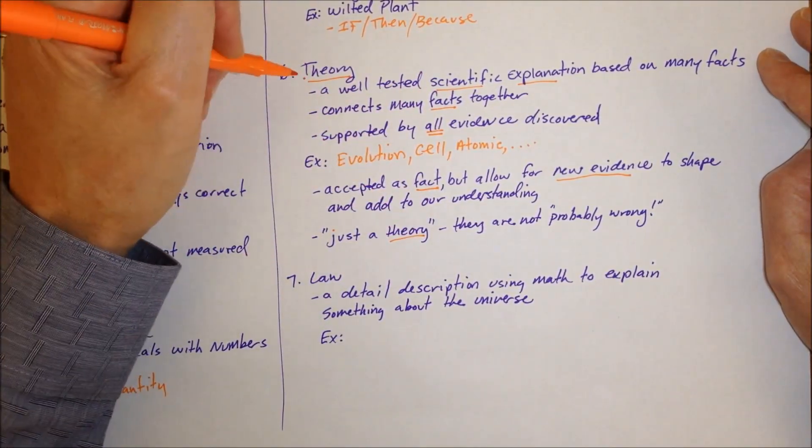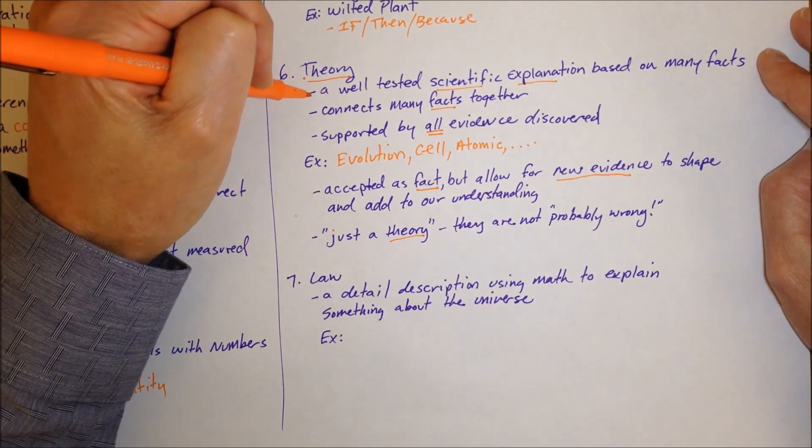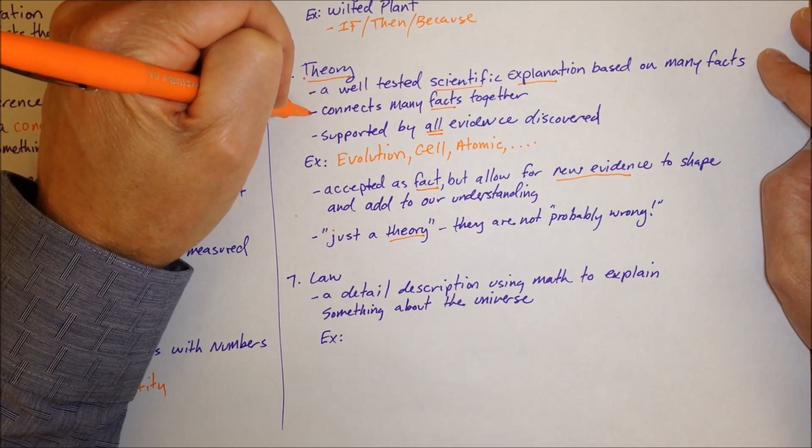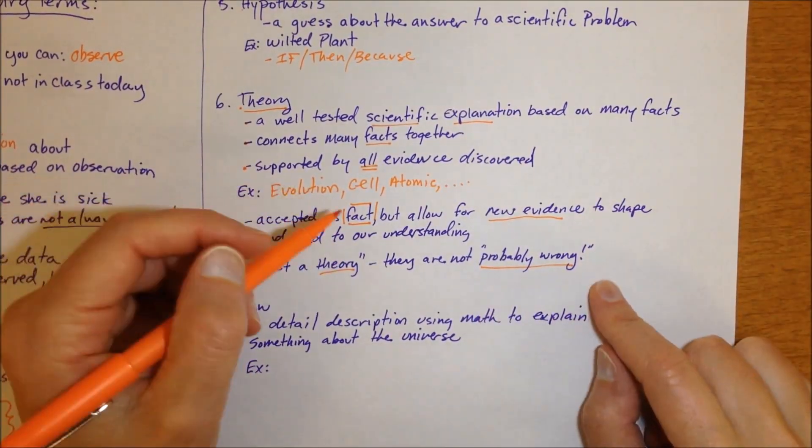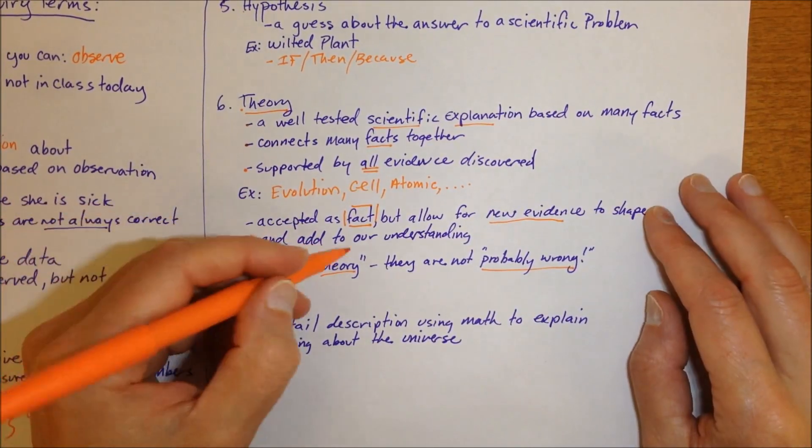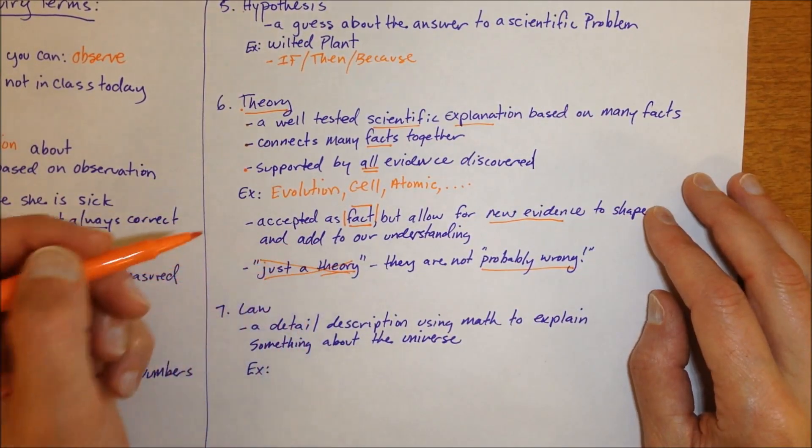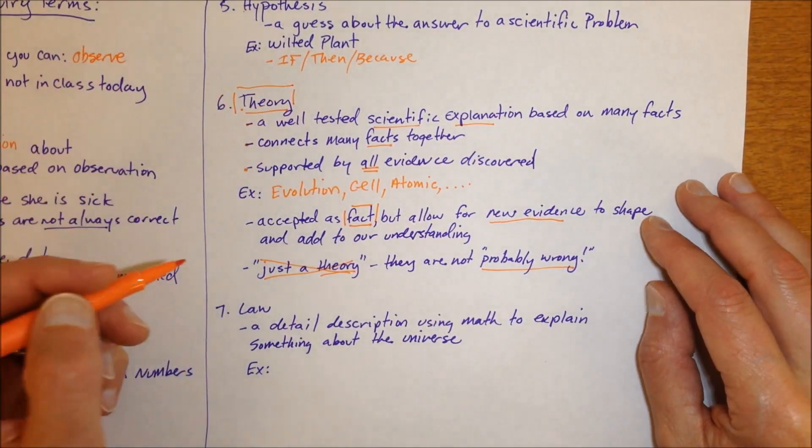In science if a scientist says this is a scientific theory that means it's well tested, connects many facts together and supports all the evidence. It's not thought by science as probably wrong, so saying just a theory is how we use it in kind of regular conversation but that's not how science uses the word theory.